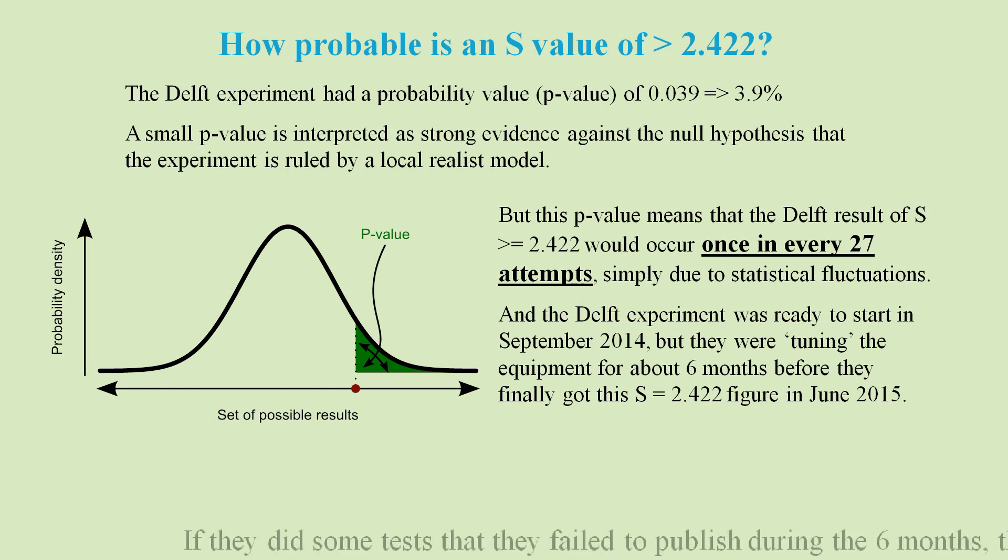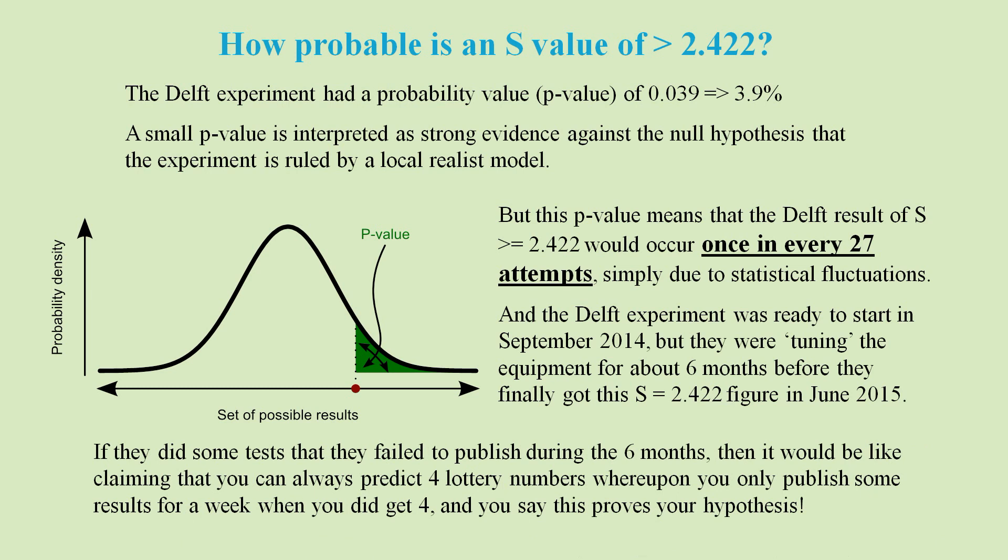So their result would be completely invalidated if they had performed some tests during the six months that they had discarded and failed to publish. I'm not saying they did this, I'm just saying it's a little suspicious.